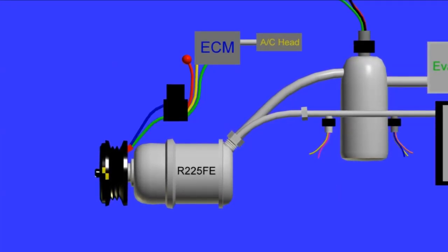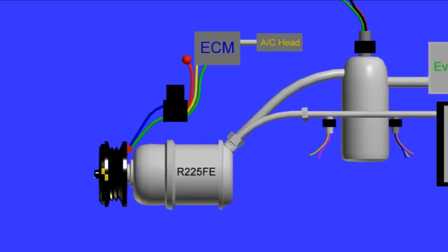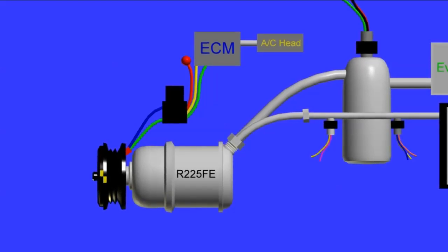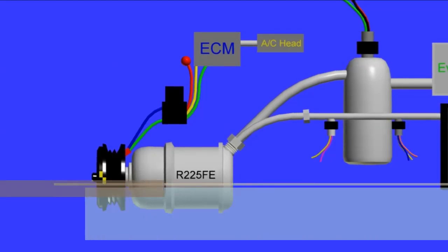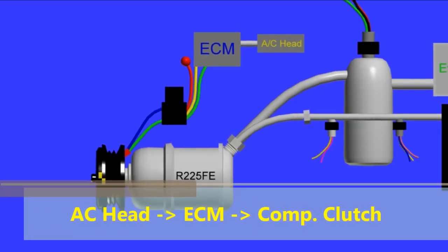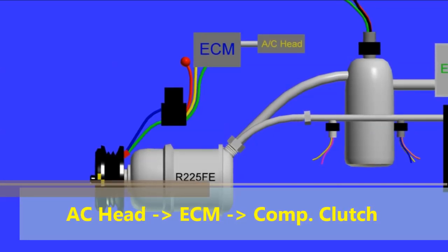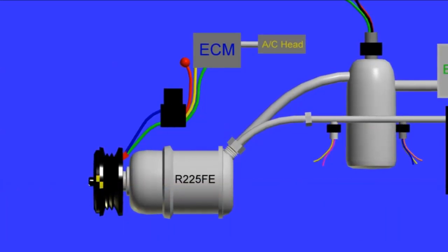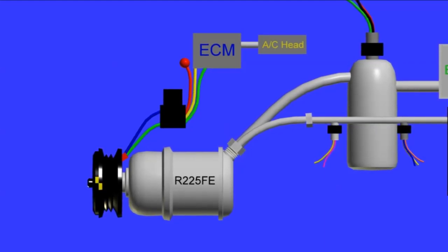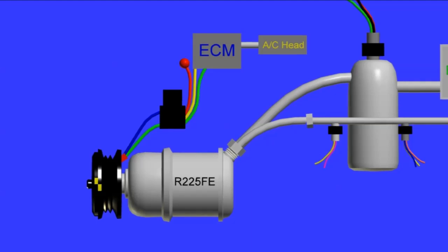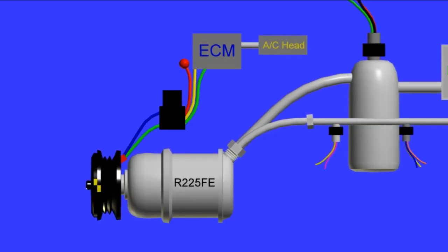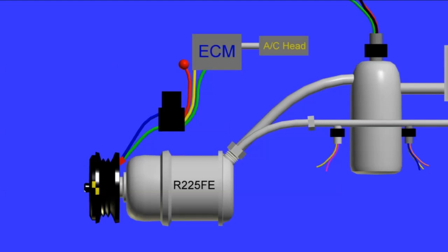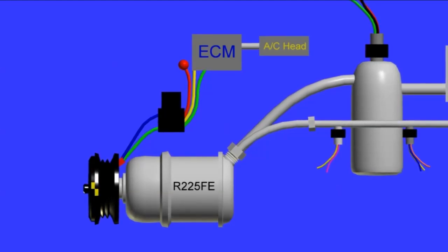Then there's the ECM and the AC head, which is the AC computer. Usually the AC head is on the dash. The AC head sends a command signal to the ECM, and then the ECM actuates the relay and also gives it a ground for the compressor clutch. It's not the other way around. It is the ECM that controls the compressor clutch, not the AC head. This is important because when diagnosing issues, it could be the ECM or the AC head, but you have to understand who controls who. The ECM always controls the compressor clutch directly.